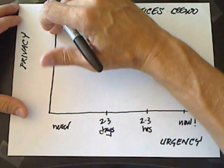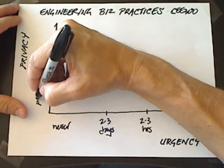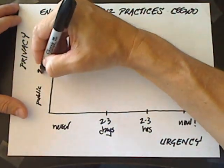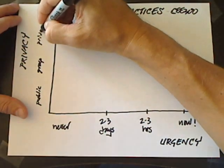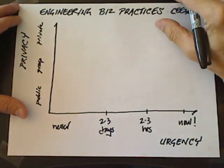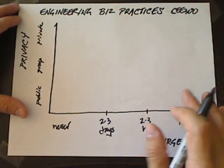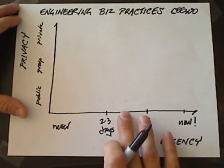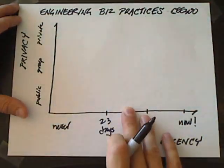The other axis is privacy, and privacy is measured in terms of the number of people whom you're expecting to see the communication. When email first showed up for most of us in the mid-90s, what a revelation it was. There was a rule of thumb that you should respond to all emails within 24 hours, which would place email somewhere in this range.